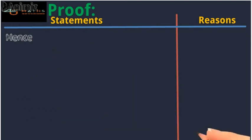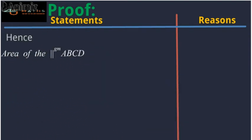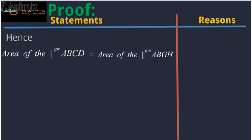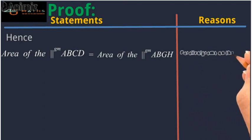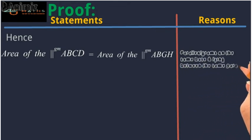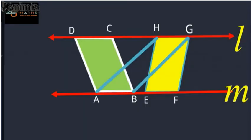Hence, the area of parallelogram ABCD is equal to the area of parallelogram ABGH. The reason is that parallelograms on the same base and lying between the same parallel lines are equal in area — and since they share the same base AB, they are equal in area.